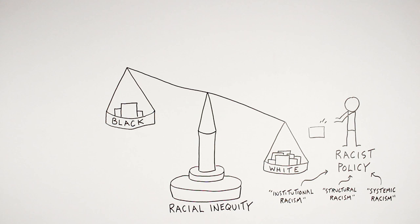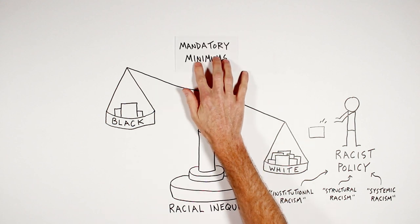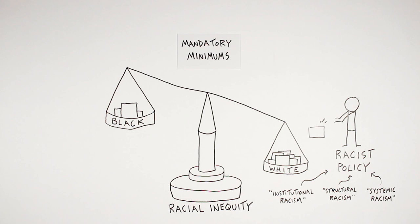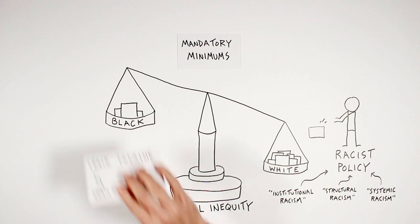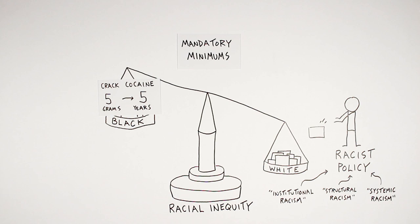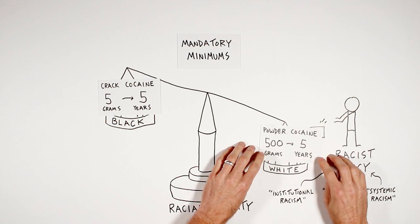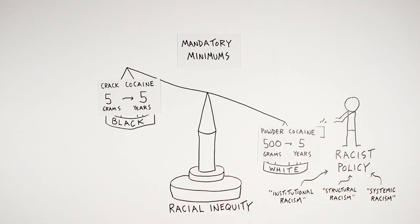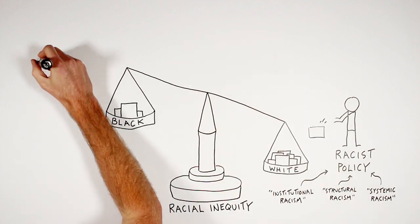As an example of a racist policy from the past, we can look at mandatory minimums. In the mid-80s, two very different sentencing guidelines came out from the federal government. For crack cocaine, which was more prominent in the black community, it only took 5 grams to get a mandatory sentence of 5 years. For powder cocaine, more prominent in the white community, it took 500 grams to get that same minimum sentence — despite no significant difference between crack and powder cocaine. A new law in 2010 fixed that problem, but just think about how many lives were affected in the two and a half decades it was in place.